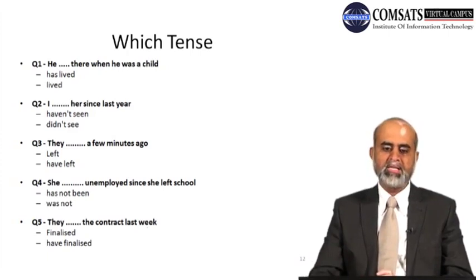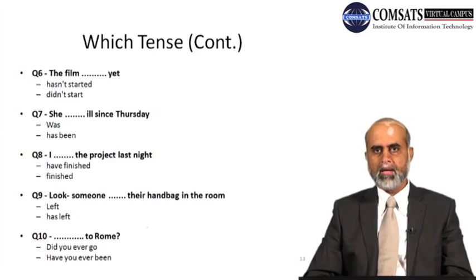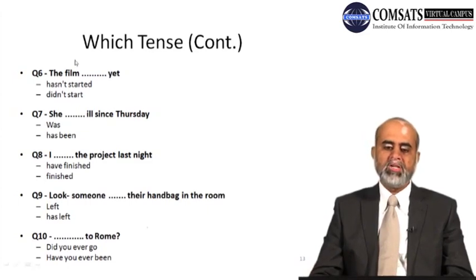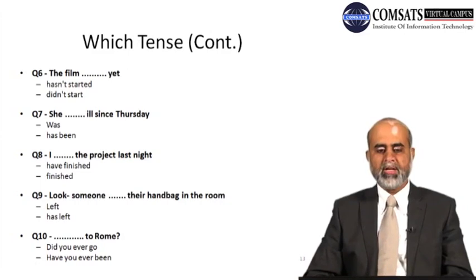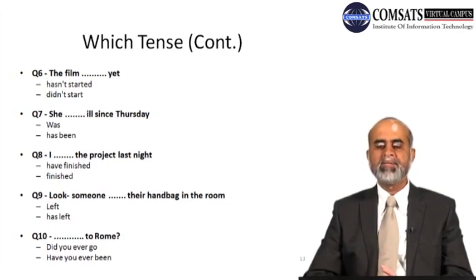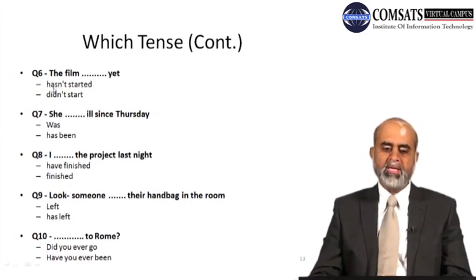Question six: 'The film [hasn't started / didn't start] yet.' 'The film hasn't started yet' is correct because of the word 'yet,' meaning 'so far.' We are still waiting for the film — the result in the present is that we are still waiting. An action with a result in the present takes present perfect tense.